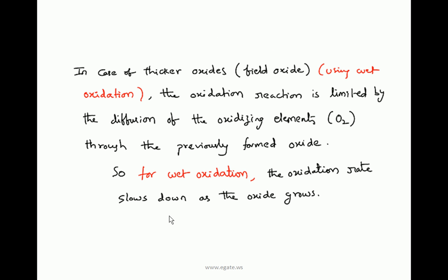In the case of thicker oxides, also called field oxide, which is used to isolate nearby transistors and metal lines, field oxides are grown using the wet oxidation technique. For wet oxidation — that is, in the case of thicker oxide — the oxidation reaction is limited by the diffusion of oxidizing elements through the previously formed oxide. The previously formed oxide prevents oxidizing elements from diffusing toward the Si–SiO₂ interface, so for wet oxidation, the oxidation rate slows down as the oxide grows.